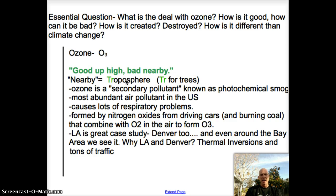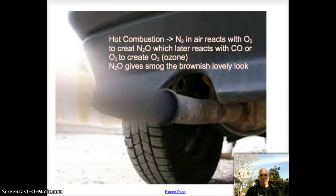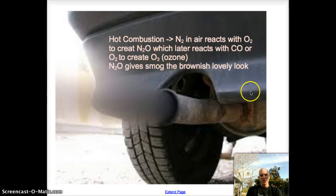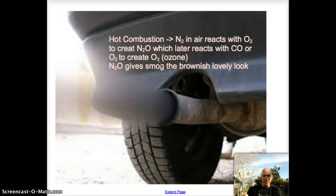Here's what ozone is: it's a secondary pollutant, which means it forms after — it's not a primary pollutant. Primary pollutants come straight from the source; a secondary one forms after it's already been emitted. Looking at this automobile, as you can imagine that tailpipe is hot. When you have hot combustion, the nitrogen in the air reacts with oxygen to create NOx, or nitrogen oxide. Once that forms, it later reacts with carbon monoxide or even oxygen to create O3. So the O3 happens kind of down the chain a little bit.